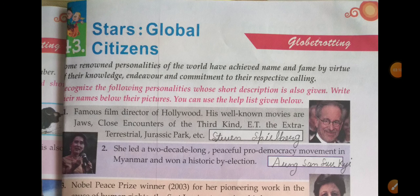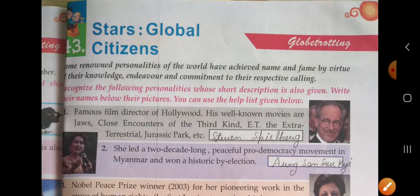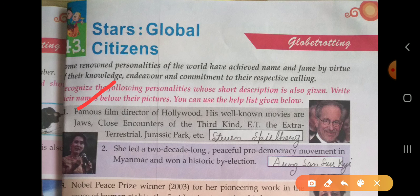Next is chapter number 43: Stars — Global Citizens. Some renowned personalities of the world have achieved name and fame by virtue of their knowledge, endeavor, and commitment to their respective callings. We will recognize the following personalities from their short descriptions.